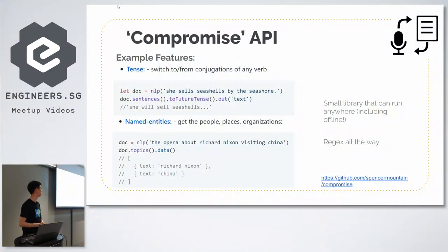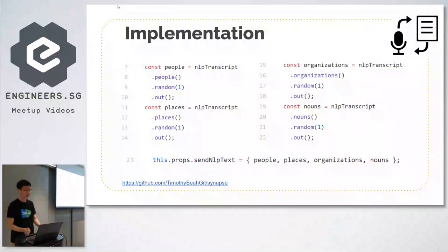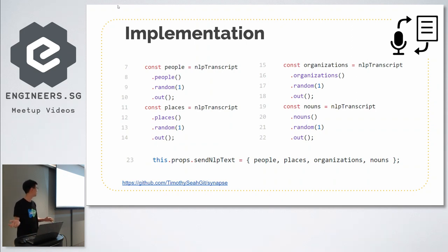The library I use for my app is very simple — it can run offline because it's just based on regex. It has quite a small dictionary and just matches whatever it can find. Some things you can do include mutating the tense of a verb and extracting people, places, and organizations. In the app, I'm extracting a random person, place, noun, or organization found in the last 10 spoken words and serving them to the app.